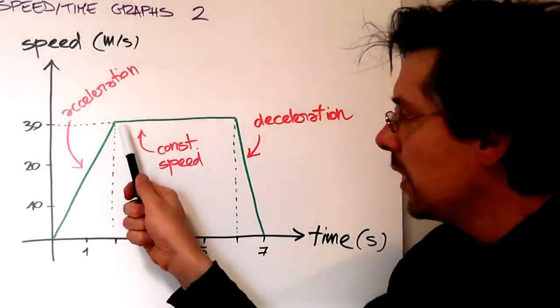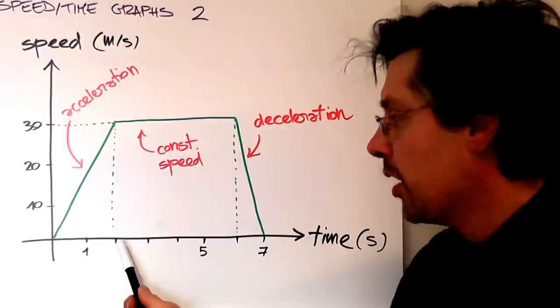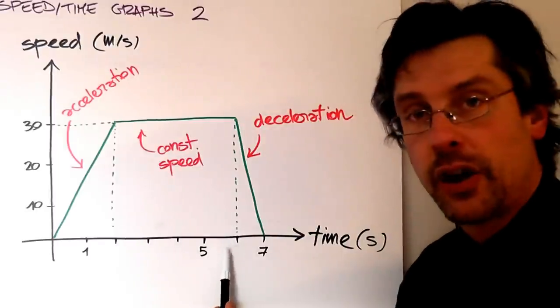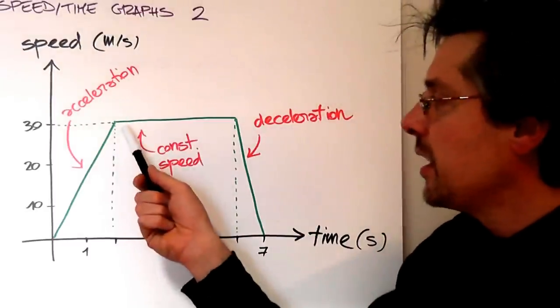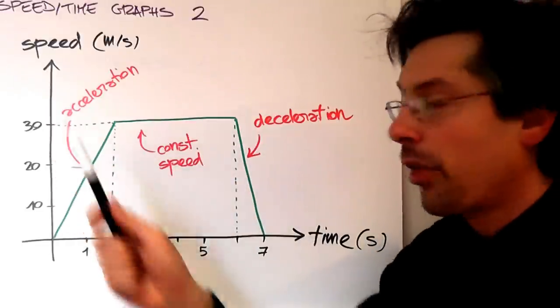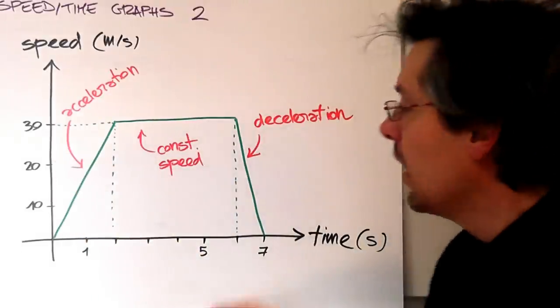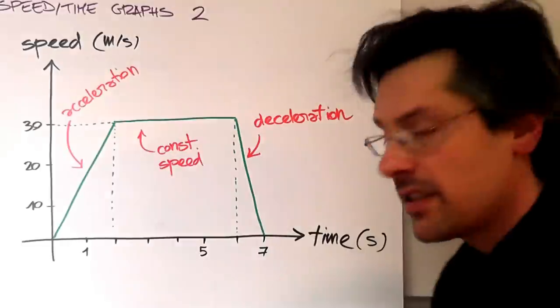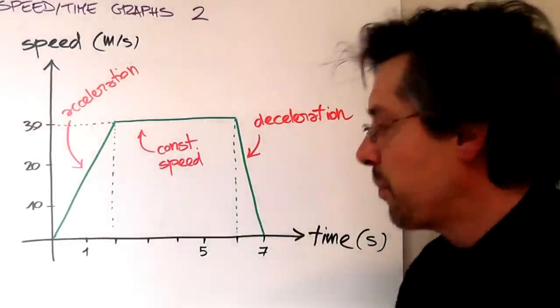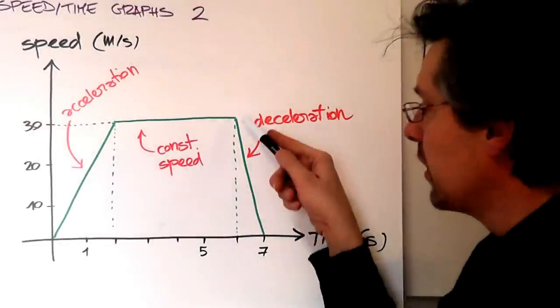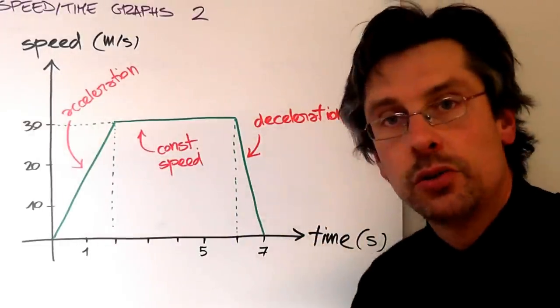Then in the following four seconds, from two to six seconds, it's keeping a constant speed of 30 meters per second. And finally, in the last second of motion pictured here, it decelerates back to zero.